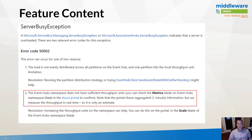One option is to over-provision by creating more throughput units than you typically need, but the problem is you're essentially paying to build for peak. Event Hub prices are reasonable, but no one wants to spend more money than necessary. The server busy exception occurs because the Event Hub doesn't have sufficient throughput units, causing the publisher to retry publishing later. With high-ingestion solutions like industrial IoT or big data, excessive retries or pushing that complexity to the publisher can result in missing data, which could alter the accuracy of downstream analytics.